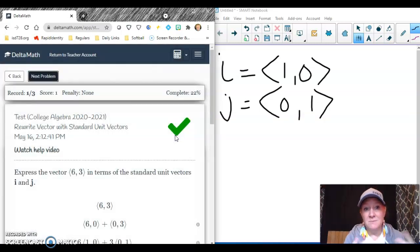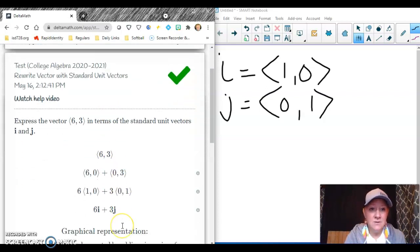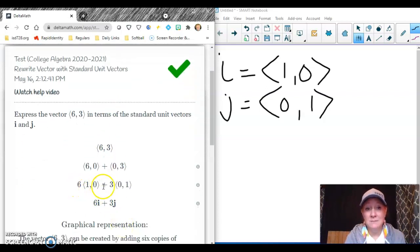Okay. So if something had been negative, it's 6 times that plus 3 times that. So really it's just kind of like shorthand. Alright, let's check what's next.